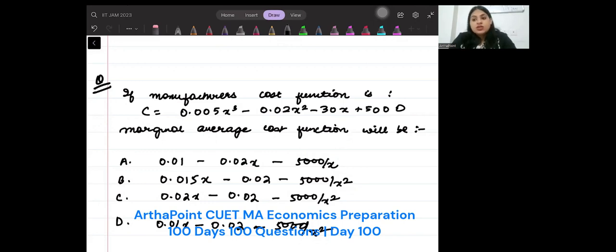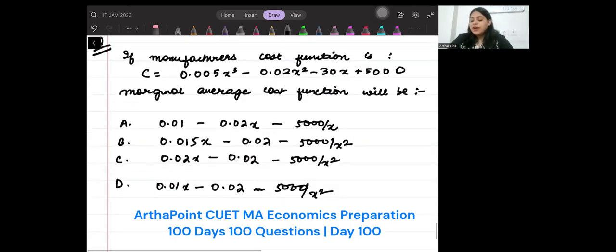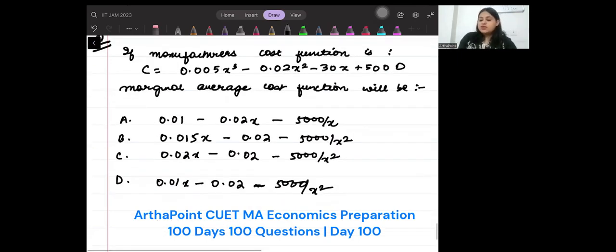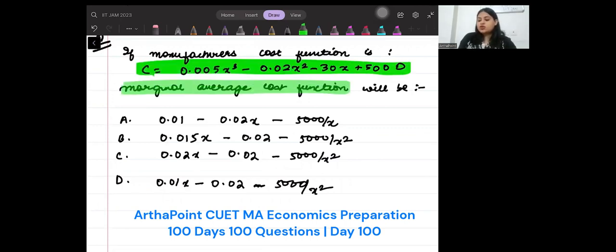And you will not skip a single question. Okay beta. So let us go ahead and look at this last question. So it says, very interesting. If manufacturer's cost function is given to you, it says marginal average cost function will be marginal average cost. So if marginal cost average cost, it is asking what will be marginal average cost function.